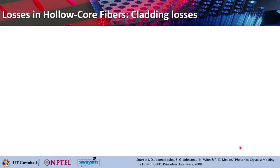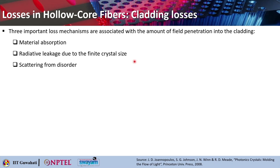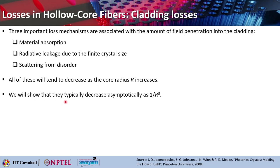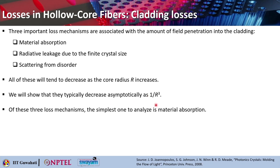Now let us look into different cladding losses. Three important loss mechanisms can be associated with the amount of field that penetrates into the fiber cladding. The first mechanism is material absorption, the second is radiative leakage due to finite crystal size, and the third is scattering from disorder. All of these losses tend to decrease as the core radius R increases, and we will show that they typically decrease asymptotically as 1/R³.